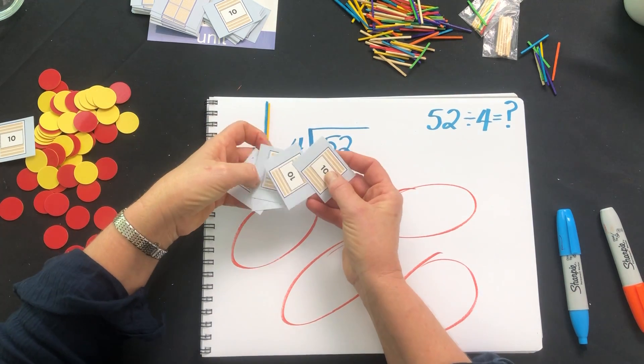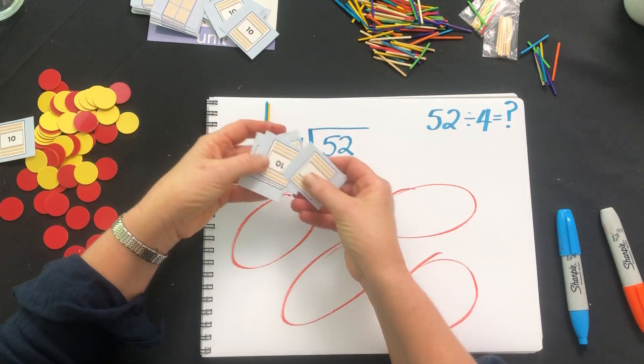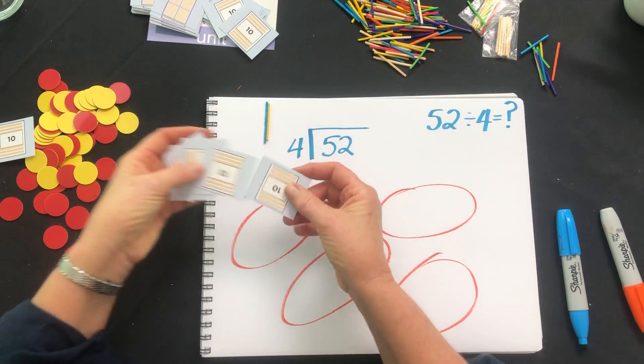So I've got 50, I want to divide 50, actually I don't have 50, I have 60 there, throw one back. Now I've got 50. 50 divided by four groups shared equally.